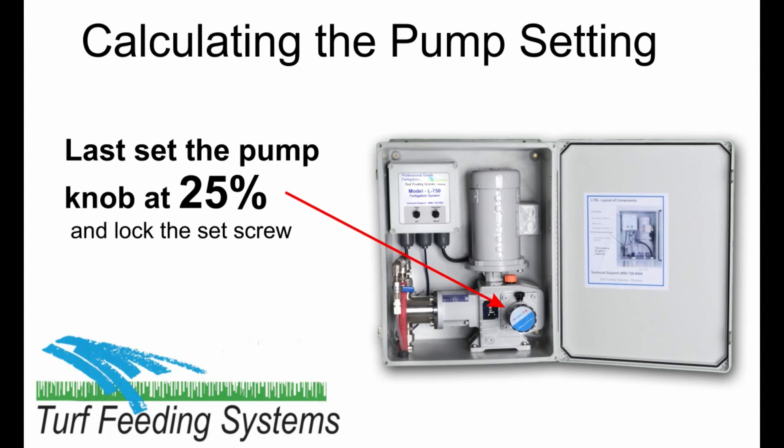Now set the pump knob at 25% and lock the set screw. Make sure the power is on and the controller is in auto, and you are ready to fertigate.